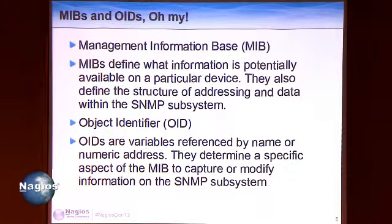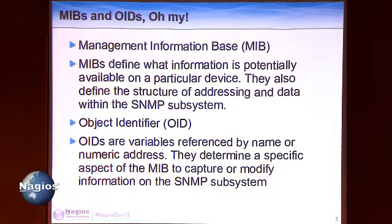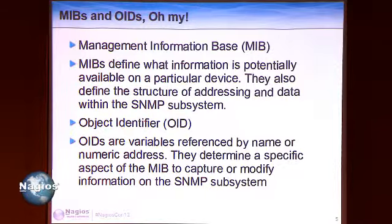So what are MIBs and OIDs? MIBs are a collection of OIDs and references on how your system can use them. The OID is an identifier that works like an address, telling your SNMP GET request or SNMP trap being sent to your manager what it's referencing and what data is actually contained within it.